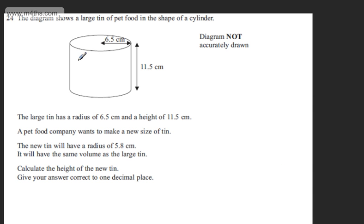This is question number 24. It says the diagram shows a large tin of pet food in the shape of a cylinder. The large tin has a radius of 6.5 cm and a height of 11.5 cm. A pet food company wants to make a new size of tin. The new tin will have a radius of 5.8 cm.